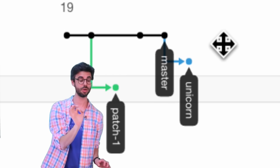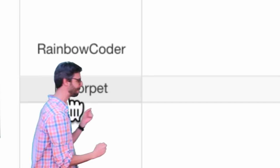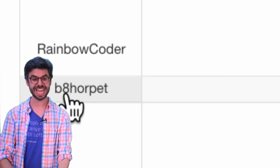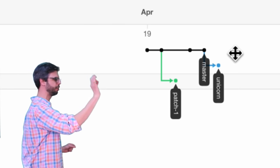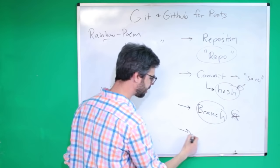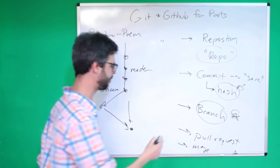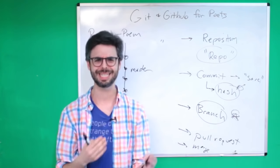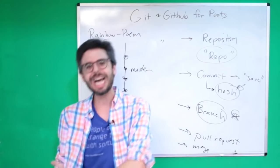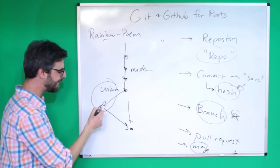Master has not gone forward since unicorn branched off. By the way, I notice someone with the GitHub username 'b8horpet' has made their own branch and could potentially contribute changes back — we'll get to that in a future video. Now I want unicorn to go back into master, which introduces a new term: a pull request and a merge. Pushing sends something out; pulling brings something in.